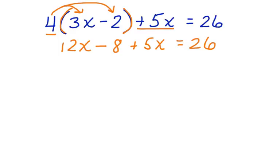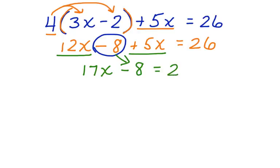Now, our next step is to combine like terms. We have 12x plus 5x, and then in the middle here we have a negative 8 or subtract 8, which we're going to leave alone right now. First, let's combine like terms. 12x plus 5x gives us 17x. We'll bring down the minus 8 into the equation, equals 26.